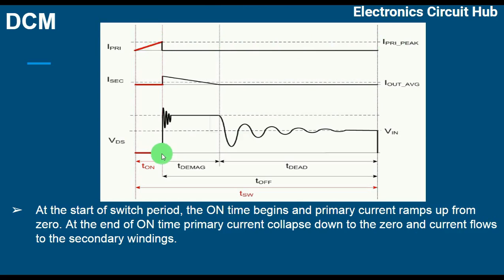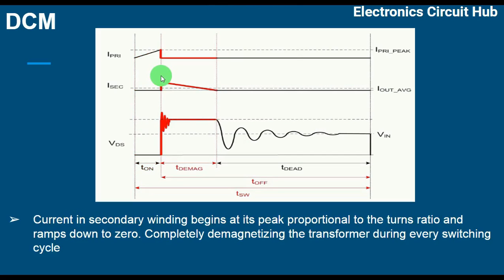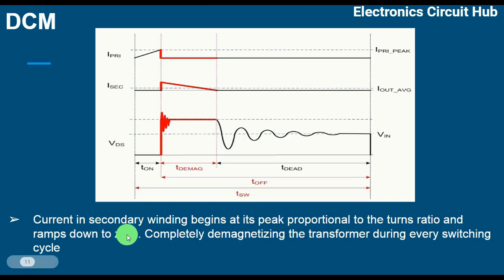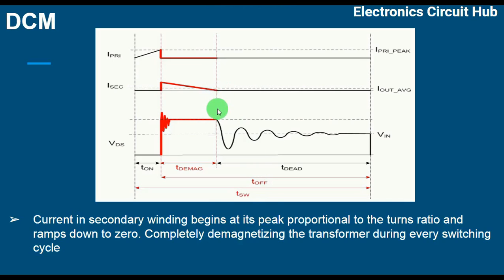At the end of on time, the primary current collapses down to zero and current begins flowing in the secondary winding. You can see the secondary current starts flowing at its peak value — current in the secondary winding begins at a peak proportional to the turns ratio and ramps down to zero, completely demagnetizing the transformer during every switching cycle. That is why this period is called the demagnetizing time.